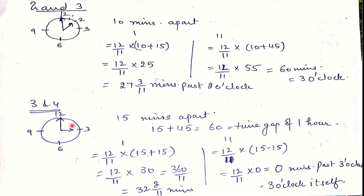Now for 3 to 4 o'clock: the hands are already 15 minutes apart. If I add 45 to 15, the total becomes 60; multiplied by a fraction greater than 1, the time gap exceeds one hour, crossing the limit of 4 o'clock. So we do not add 45 here. The rule is: when the time gap is less than 15 minutes, add 15 and add 45; when the time gap is 15 minutes or greater, add 15 and subtract 15.